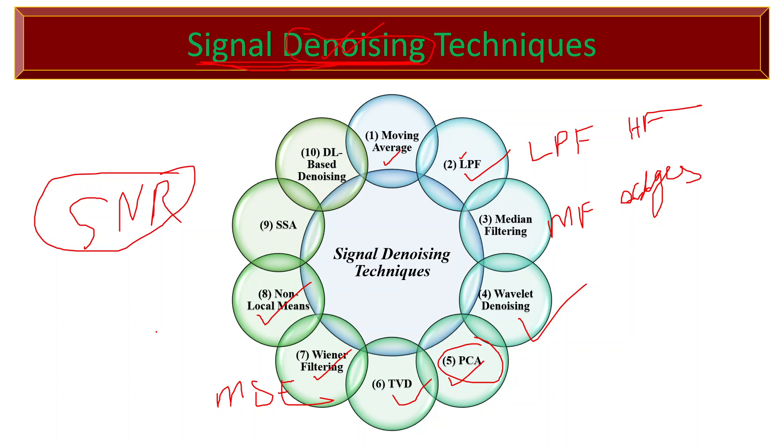Non-local means, or NLM, denoising takes advantage of redundancy in natural signals by comparing similar patches across the image or signal to estimate the denoised value at each point.